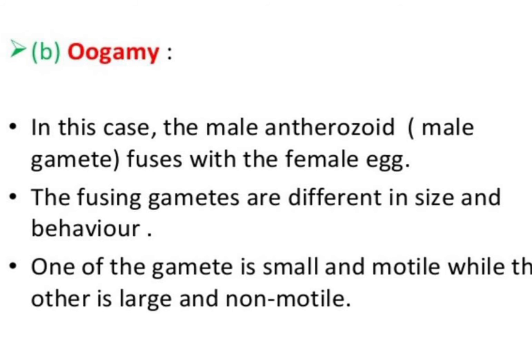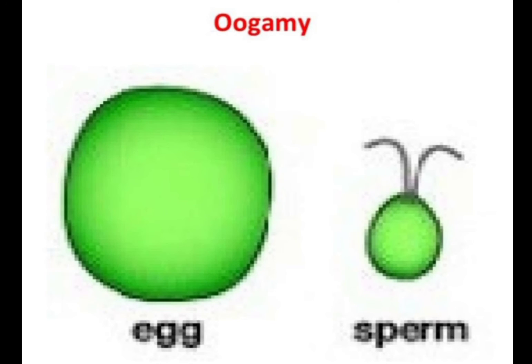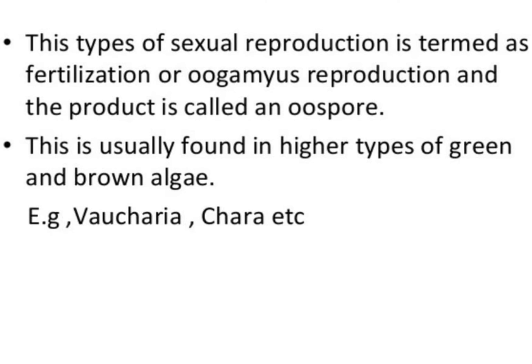In oogamy, the male antherozoid fuses with the female egg. The fusing gametes are different in size and behavior: one gamete is small and motile while the other is large and non-motile. This type of sexual reproduction is termed fertilization or oogamy, and the product is called an oospore. It is usually found in higher types of green and brown algae, such as Vaucheria and Chara.